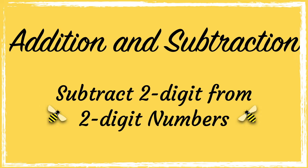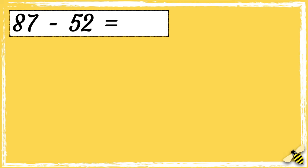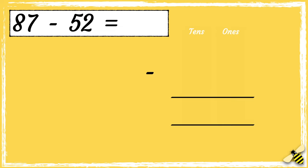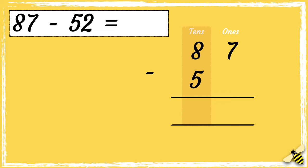In this video we're going to subtract two two-digit numbers using column subtraction. Here is a number sentence: 87 subtract 52. We need to line the numbers up correctly when we're doing column subtraction, so we have the tens in one column and the ones in another column. The number 87 has eight tens and seven ones.